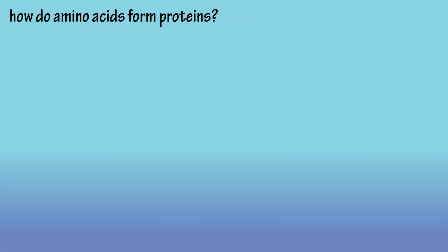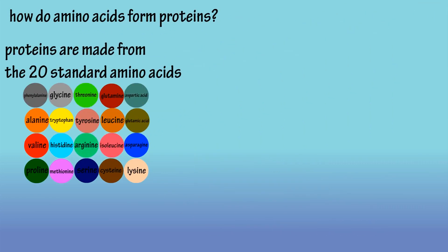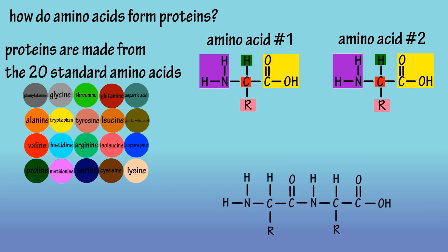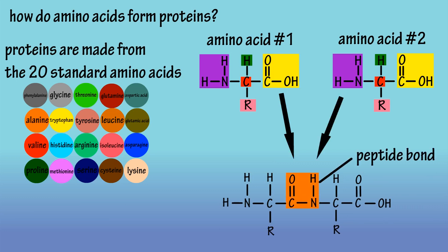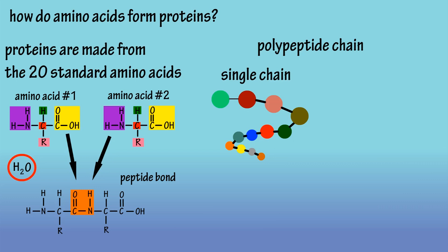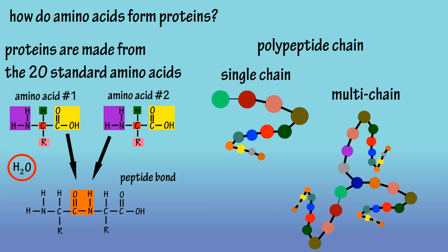Proteins are built from the 20 standard amino acids. The first thing that happens is that two amino acids come together to form what is called a peptide bond. A peptide bond is when the carboxyl group of one amino acid bonds with the amino group of another amino acid. Two hydrogen atoms and one oxygen atom are removed from the peptide bonding process, so the peptide bond results in the release of a water molecule, H2O. More amino acids can then link in and form what is called a polypeptide chain. Some proteins are single polypeptide chains, and other proteins have polypeptide chains linked together.